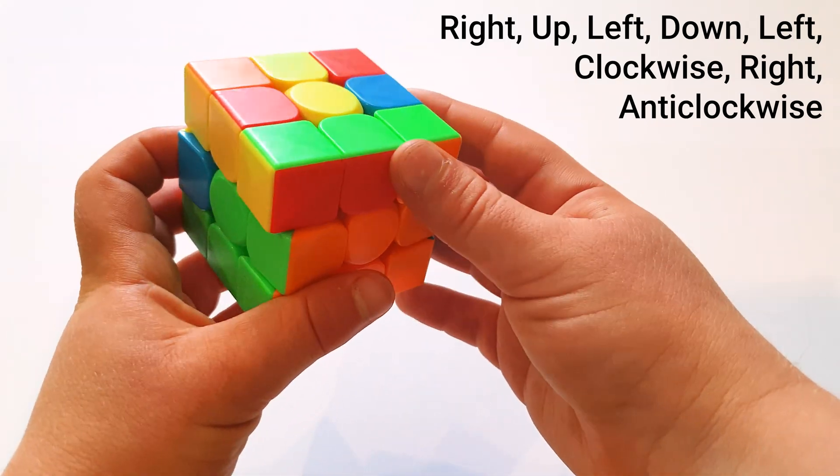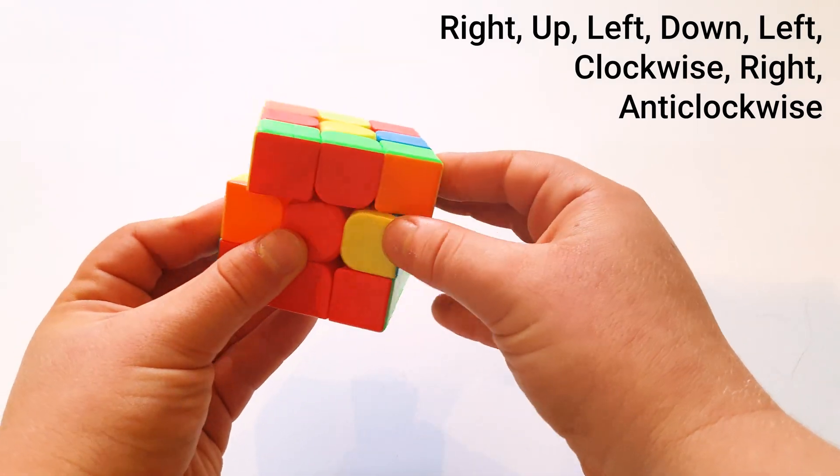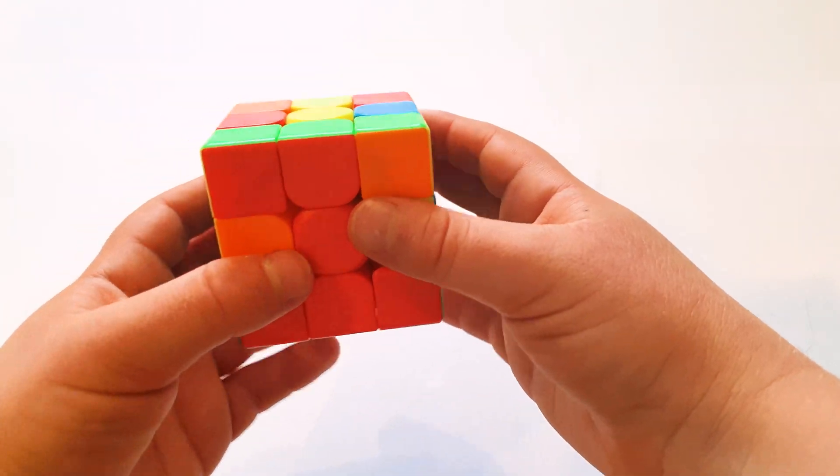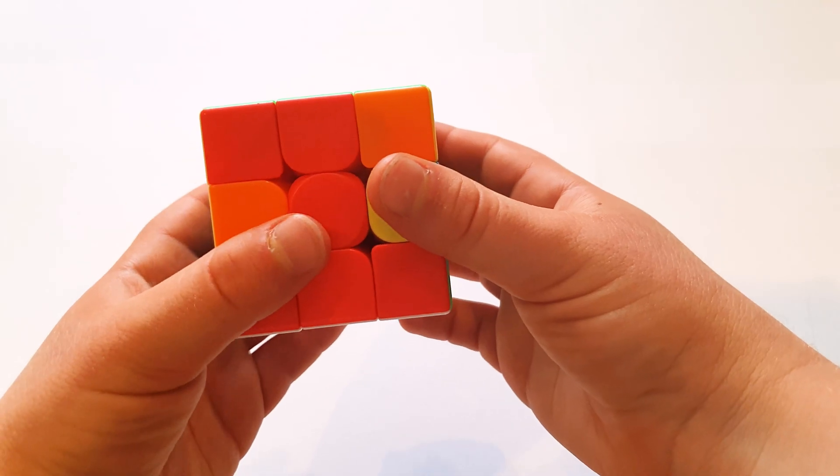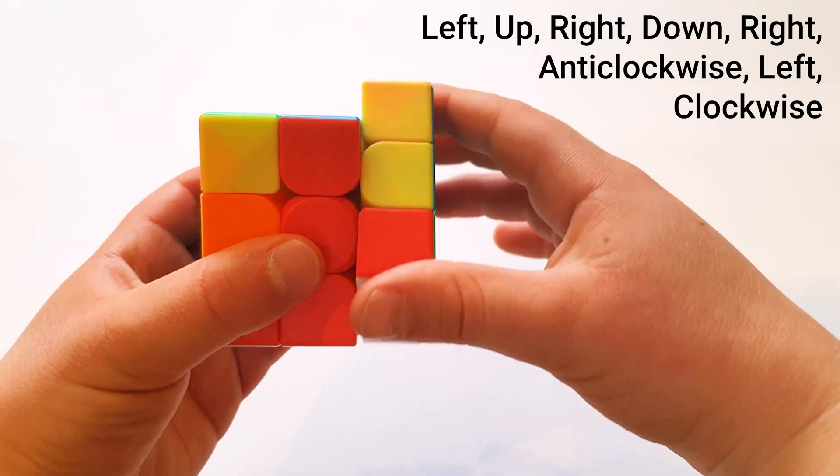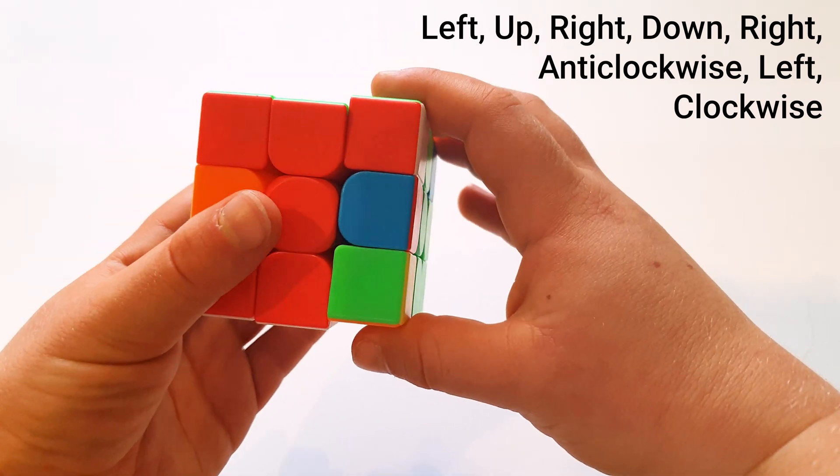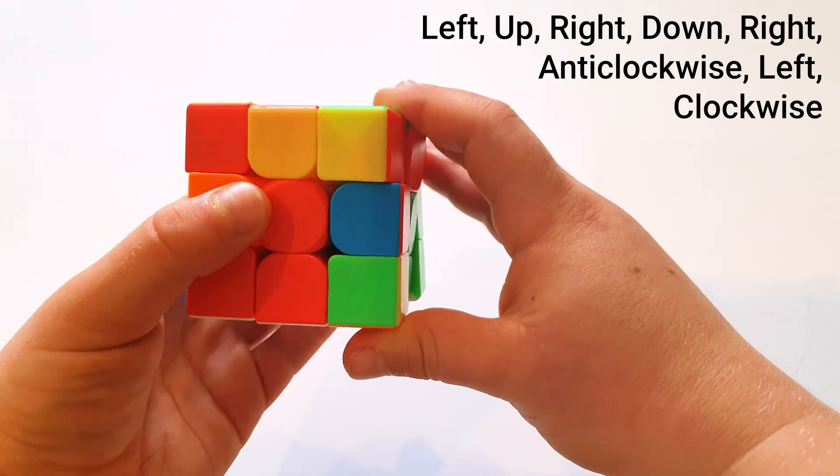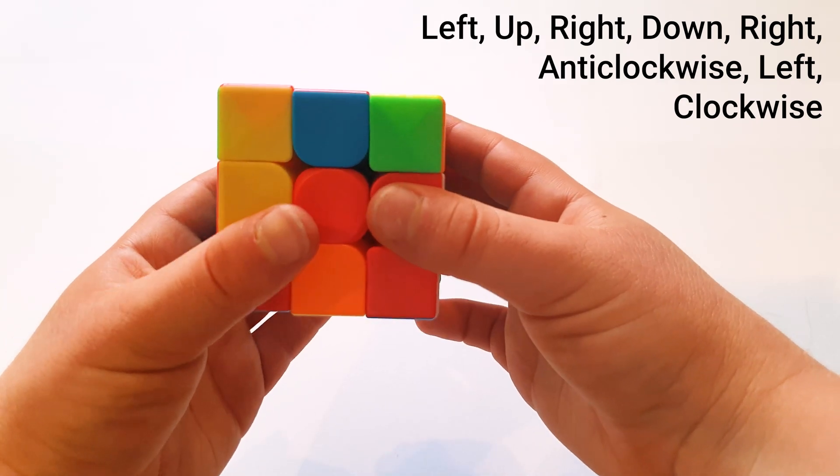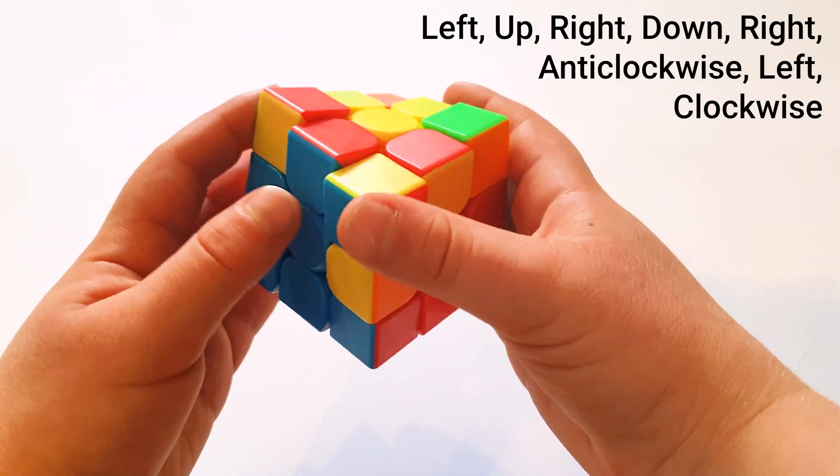You find another one. Red, green. Green is on the right, so I do the one for the right. Top left, right up, top right, right down, top right. Turn the face facing you anti-clockwise. Top left, turn the same face clockwise. And it's in.